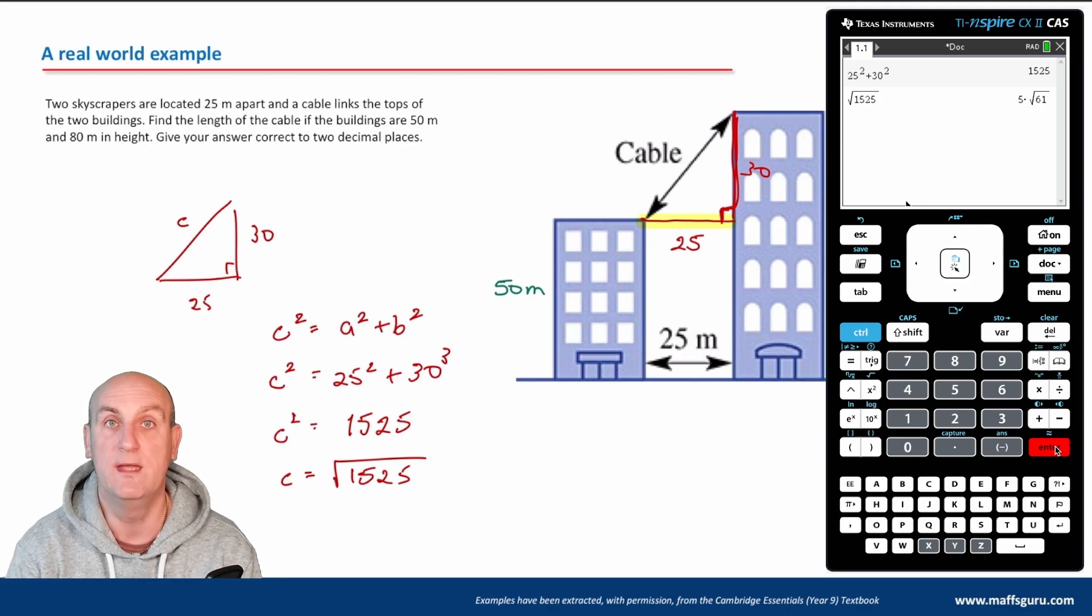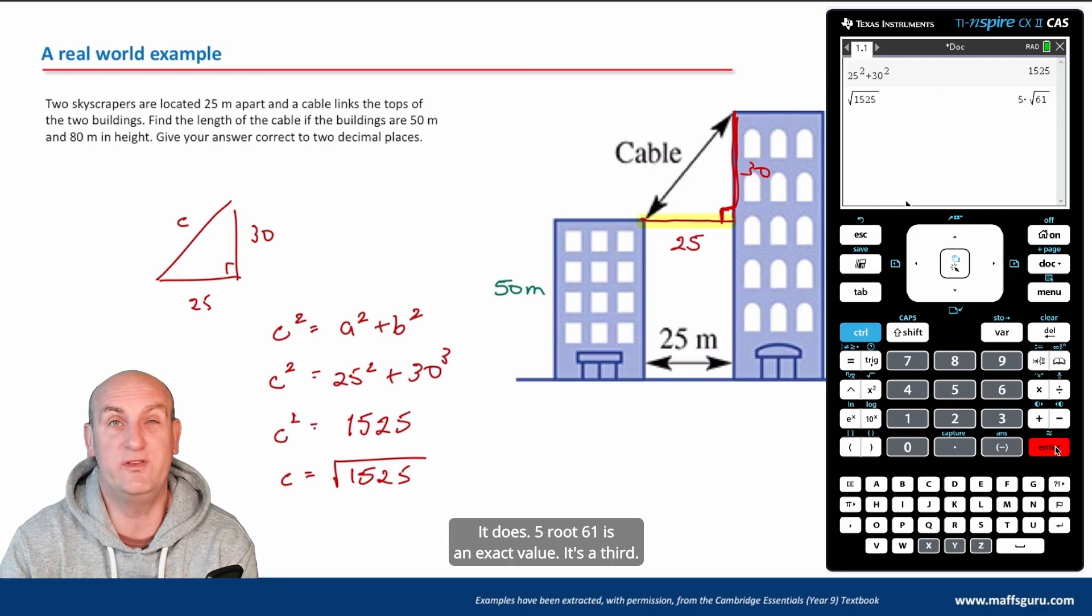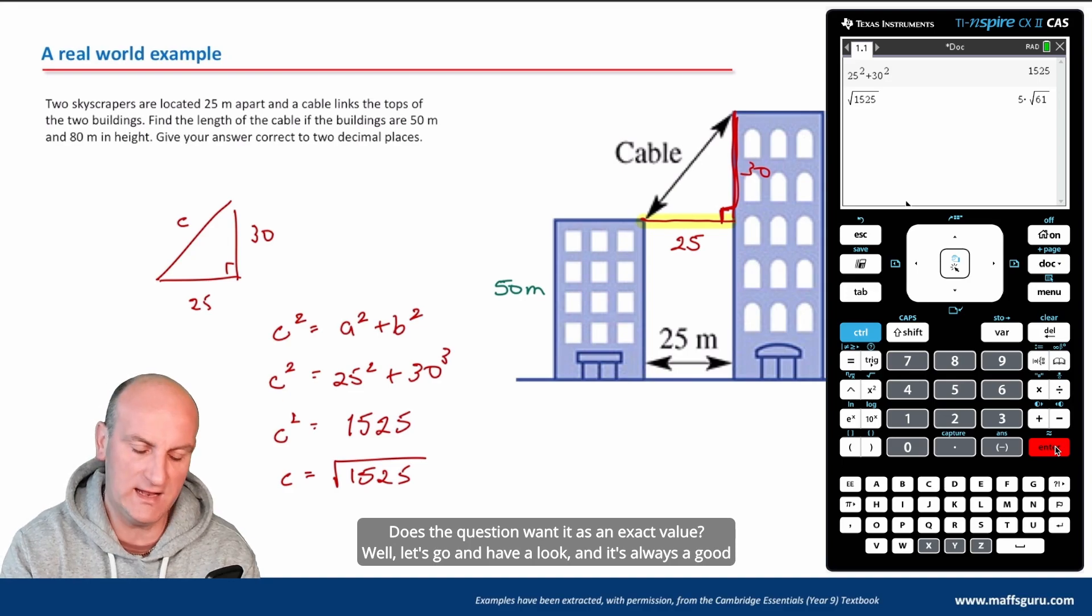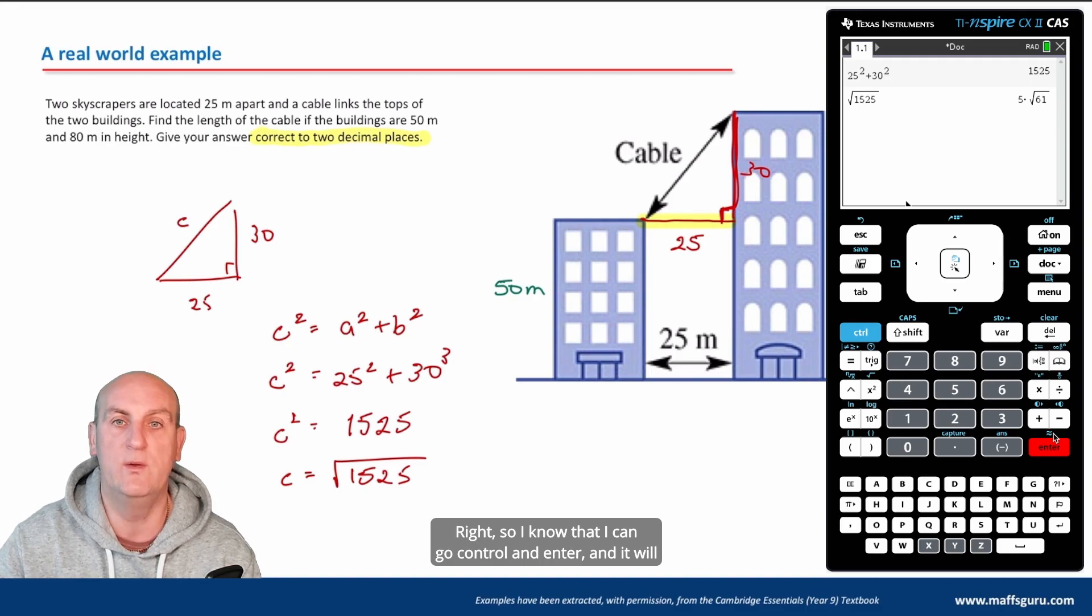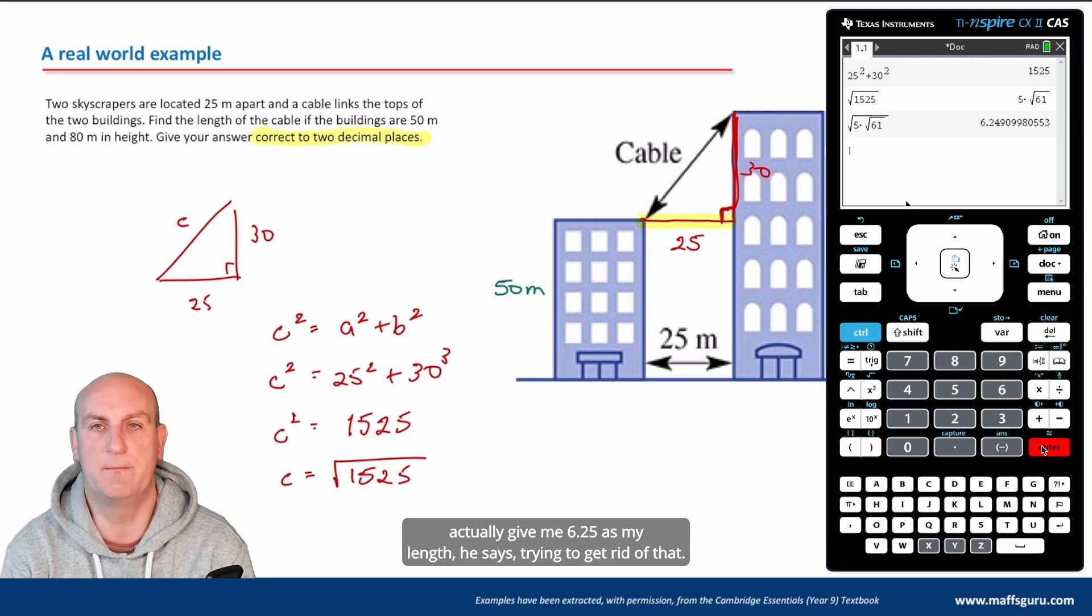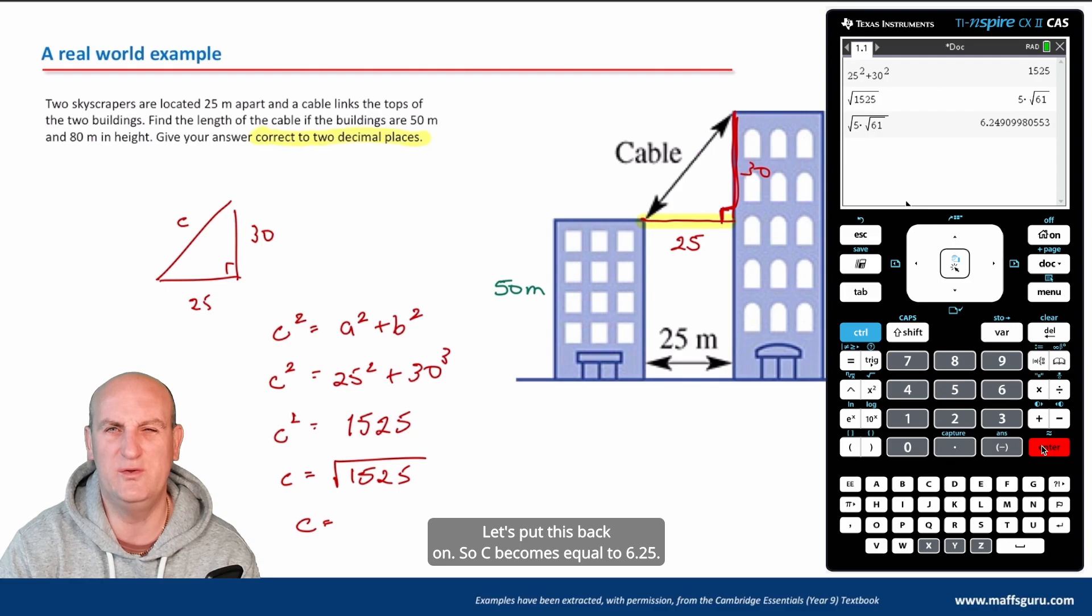Now, for those of you watching previous videos, that looks a bit funny. Five root 61 is an exact value. Does the question want it as an exact value? Well, let's go and have a look. It's always a good idea to make sure that you highlight the order of magnitude it wants. Give your answer correct to two decimal places. So I know that I can go control and enter and it will actually give me 6.25 as my length. So C becomes equal to 6.25.